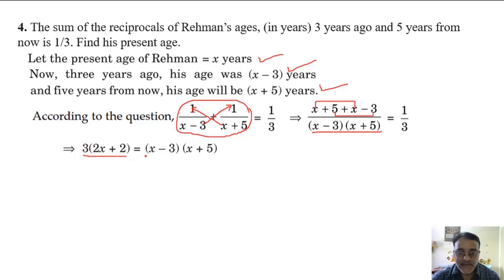Now open this bracket and multiply these two. So we will get 6x plus 6 equals x square plus 2x minus 15.